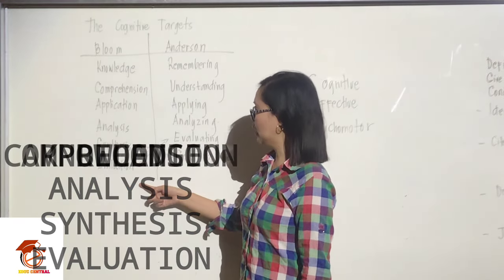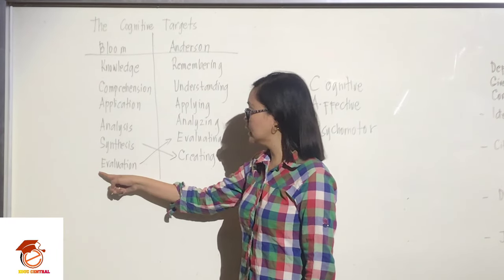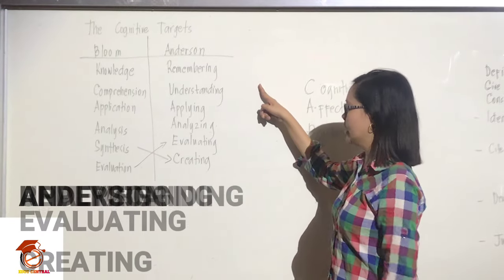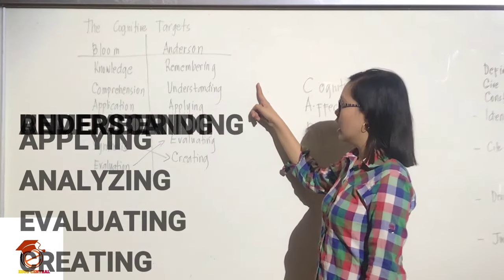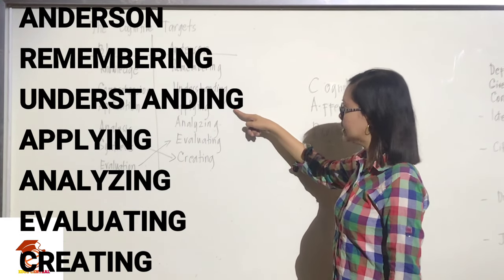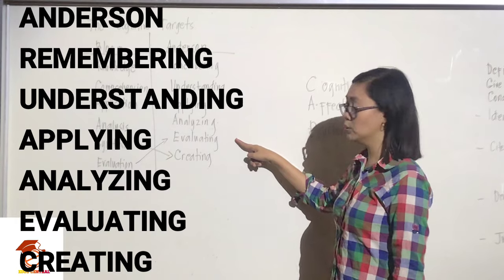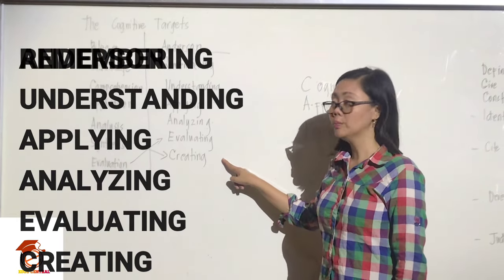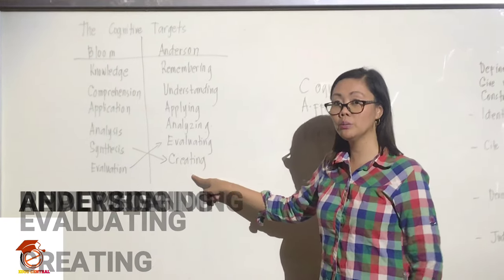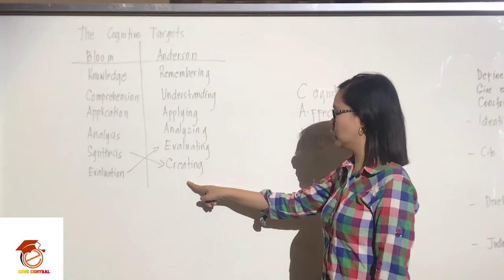For Benjamin Bloom, the highest among the cognitive thinking skills is evaluation. For Anderson's taxonomy, the mnemonic is R-U-A-A-E-C: R is remembering, U is understanding, A is applying, another A is analyzing, E is evaluating, and C is creating. For Anderson, creating is the highest among the cognitive thinking skills.